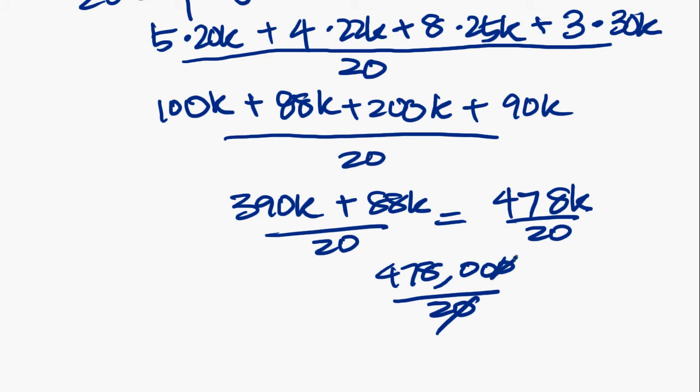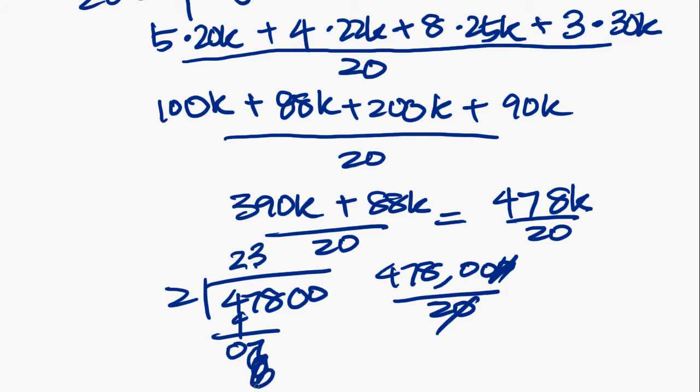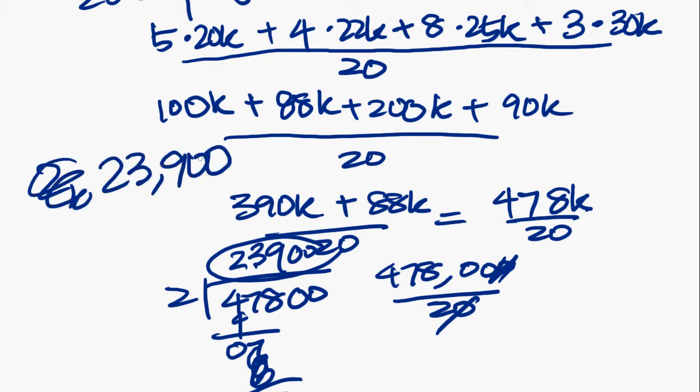That's 478K over 20. Erase a 0 here. Erase a 0 here. And then let's do some division. 2 goes into 47 twenty-three times. Let's get a 6 down here. That goes into 18 nine times. And the rest are 0's. So the answer is 23,900. And that is answer C.